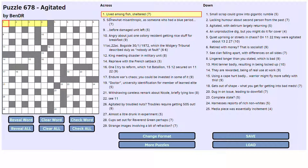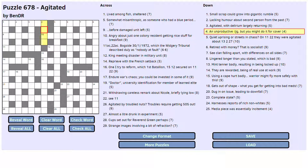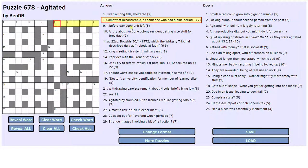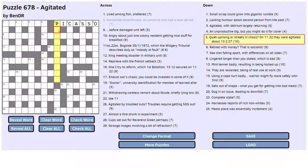Lived among fish. Sheltered. Lived could be was. Existed. Lived. Sheltered. No, I don't know. An unproductive dig, but you might do it for cover. Duck. I don't know. Small scrap could grow into gigantic rumble. Small scrap could be small as an S. Gigantic rumble. I don't know. Bad start. But somewhat misanthropic as someone who had a blue period. Picasso. That is somewhat. I mean, somewhat means part of this phrase. Misanthropic as someone. And Picasso famously had a blue period, didn't he, in his career as a painter.